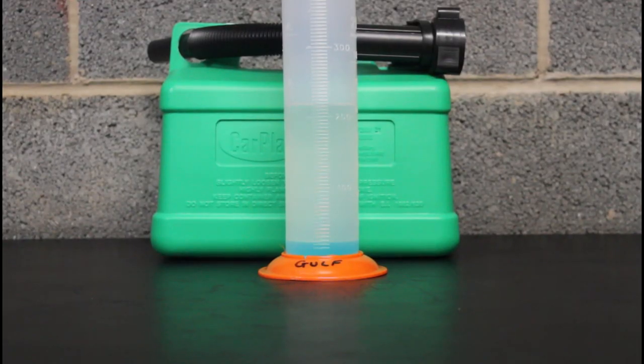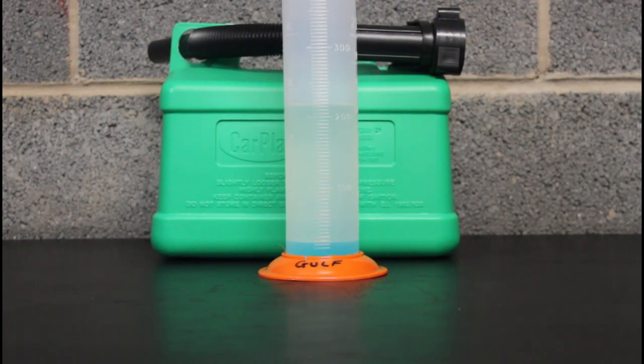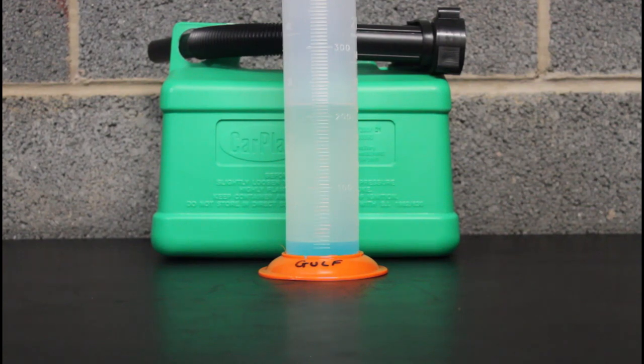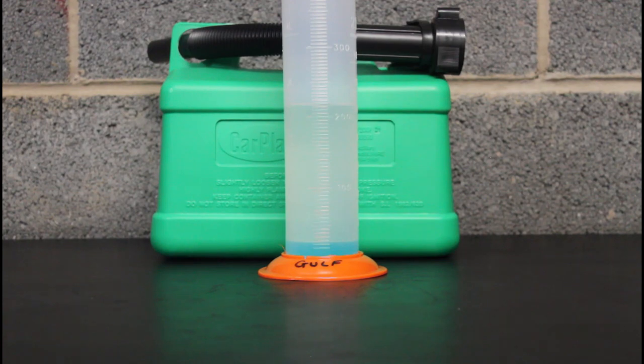In at number three is Gulf. It's another two and a half percent one. Now this is a top side of two and a half percent. It's just slightly above the notch which is why it's coming in third. 146.9 pence per litre. Very similar to the BP. It is virtually the same apart from the fact it's got slightly more ethanol in it.